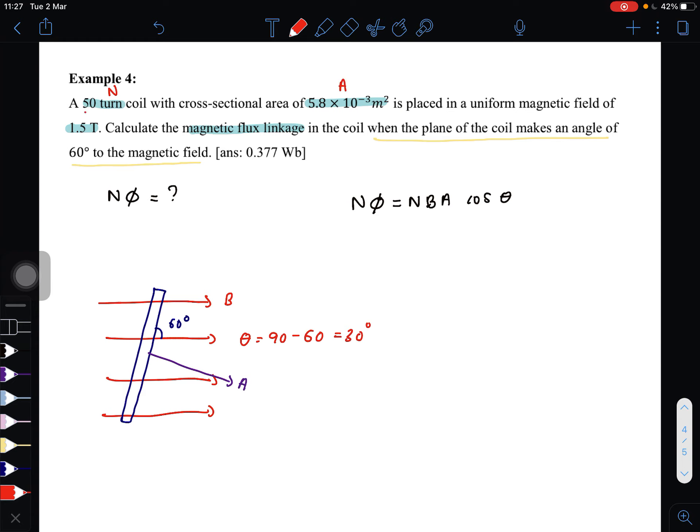Then this is the area, this is B. Everything is in SI units. Just substitute: 50 times 1.5 times the area, and then cos 30°. So we get 0.377 weber.